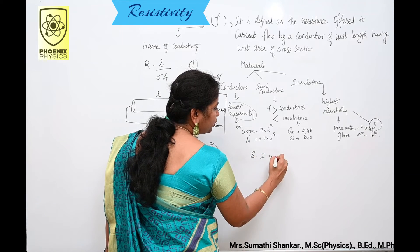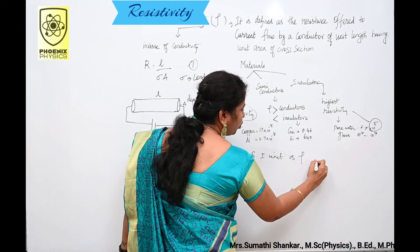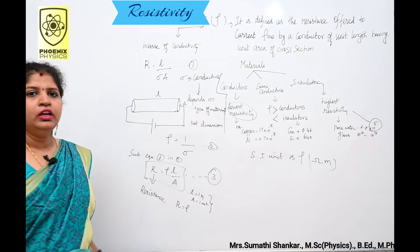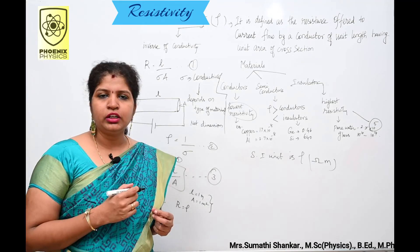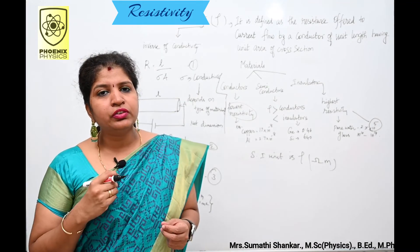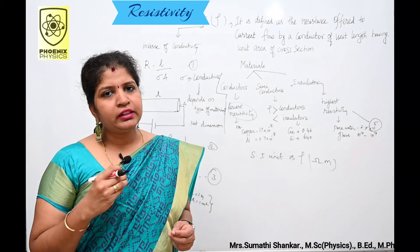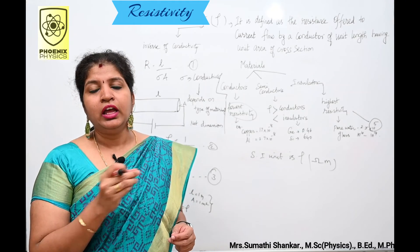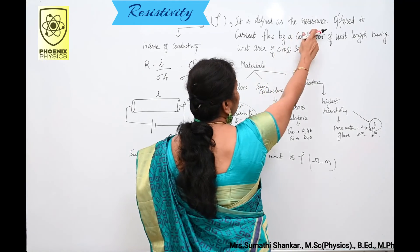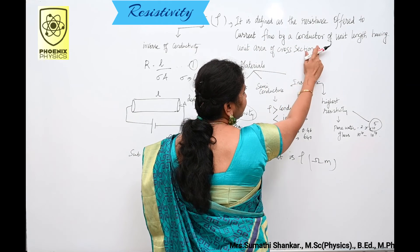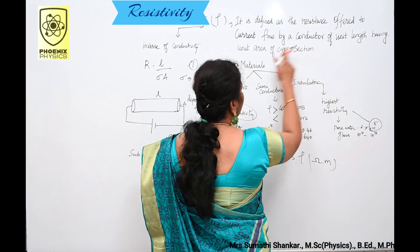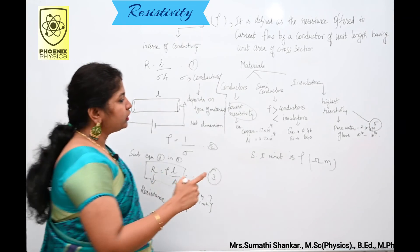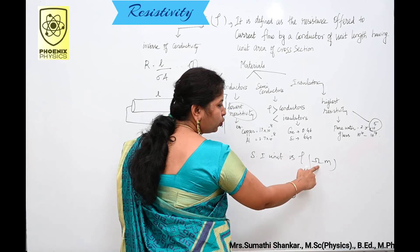Then SI unit is ohm meter. In this class, we studied about electrical resistivity of the material. Electrical resistivity of the material is defined as the resistance offered to current flow by the conductor of unit length having unit area of cross section. And the SI unit of resistivity is ohm meter.